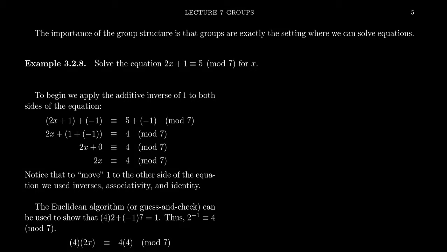In this final video for Lecture 7, I wanted to demonstrate to you the importance of the group structure and why we want the axioms of associativity, inverses, and identities. Why are they so important? Well, as one example, the actions of a group are exactly the axioms one needs to solve equations.